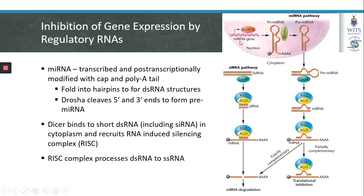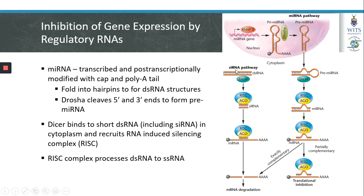MicroRNAs are transcribed from genes in the nucleus and are also post-transcriptionally modified with a cap and a poly-A tail. In the nucleus, an enzyme called Drosha is involved in removing the 5' cap and poly-A tail from a primary microRNA, resulting in the formation of a pre-microRNA. MicroRNAs can fold into a secondary structure, folding back upon themselves to form hairpin structures due to base complementarity. The pre-microRNA is then exported into the cytoplasm. siRNAs are double-stranded RNAs with exact base complementarity to an mRNA, and are commonly introduced artificially into cells to adopt the same mechanism of RNA degradation that occurs with microRNAs.